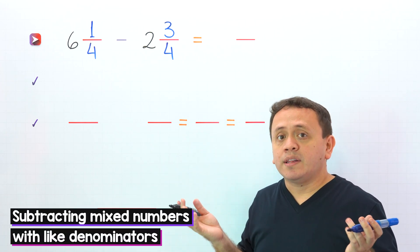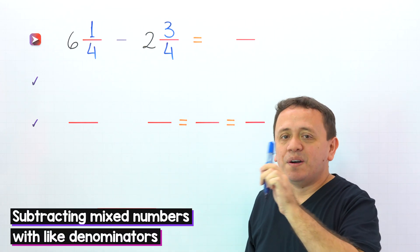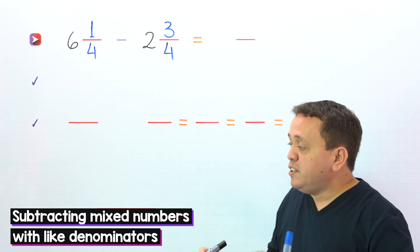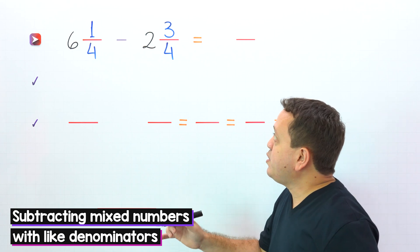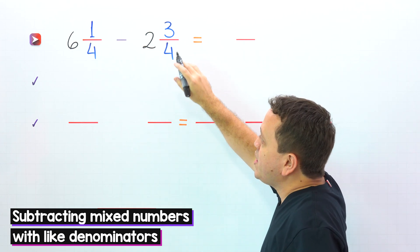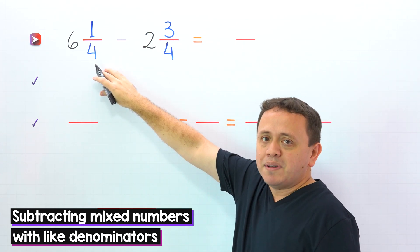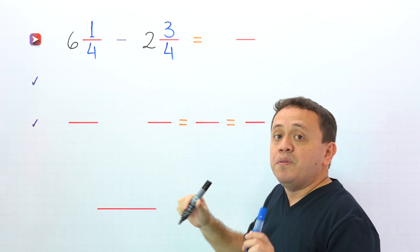Hi! Today we're going to take a look at how to subtract mixed numbers with like denominators. This is a special case where the fraction of the second mixed number is greater than the fraction of the first mixed number.